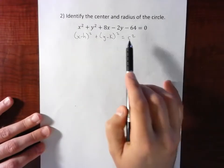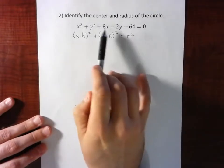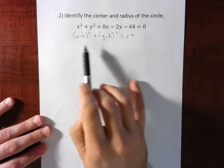That's the center. And then we can also see the radius very quickly. So our goal is to change this general form, make it look like standard form.